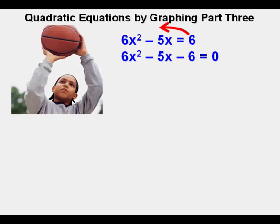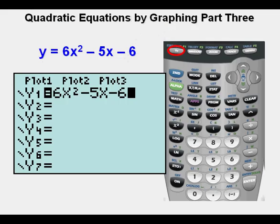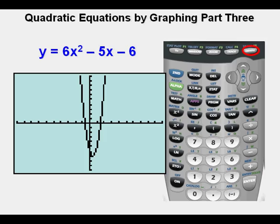Now the equation is 6x² - 5x - 6 = 0. Here he replaces the equation in y equals view. He presses graph or zoom 6.